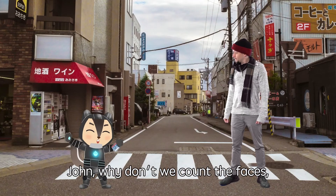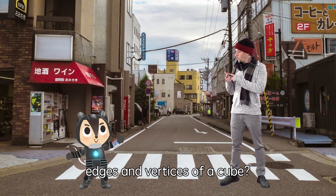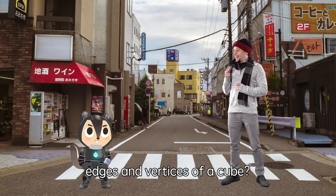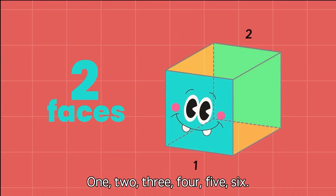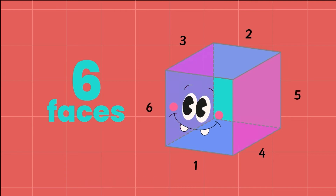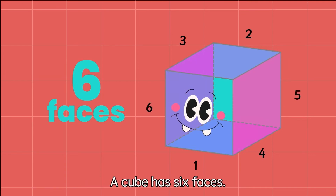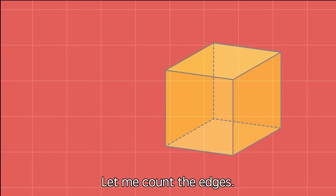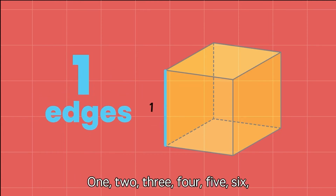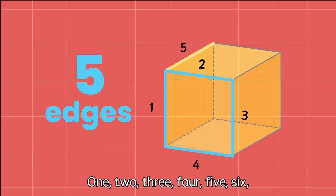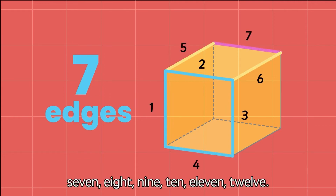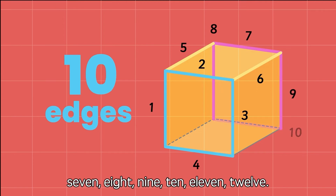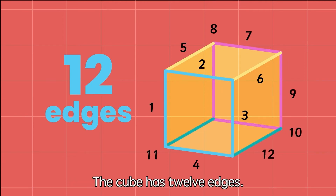John, why don't we count the faces, edges and vertices of a cube? One, two, three, four, five, six. One, two, three, four, five, six, seven, eight, nine, ten, eleven, twelve. The cube has twelve edges.